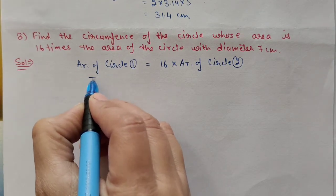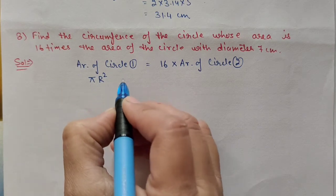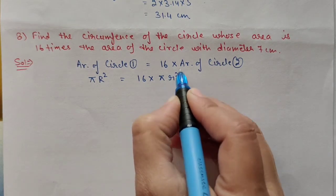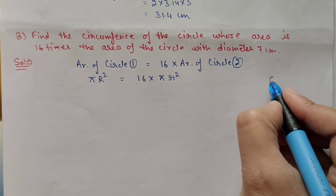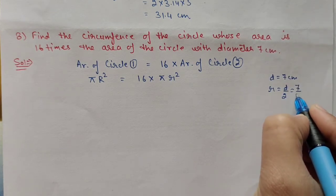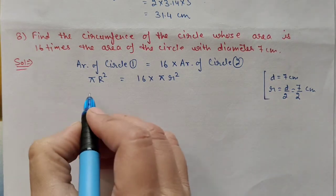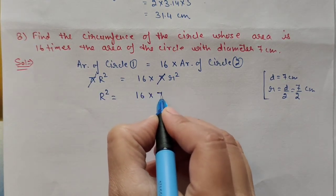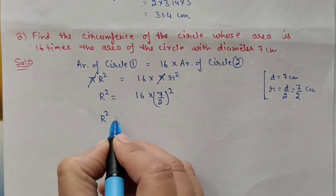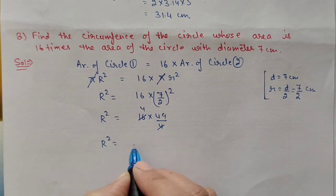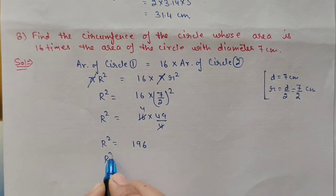Area of circle 1 is pi R square equals 16 times pi r square. For circle 2, diameter is 7 centimeter so radius is 7 by 2. Cancelling pi from both sides, R square equals 16 into (7/2) squared, which is 16 into 49 by 4. Cancelling 4, R square equals 196, so R equals 14 centimeter.